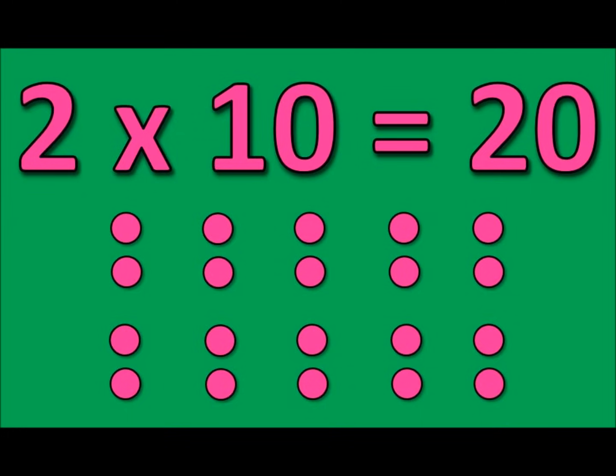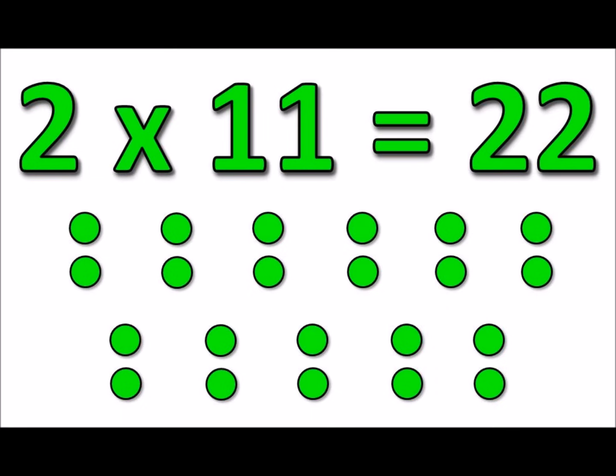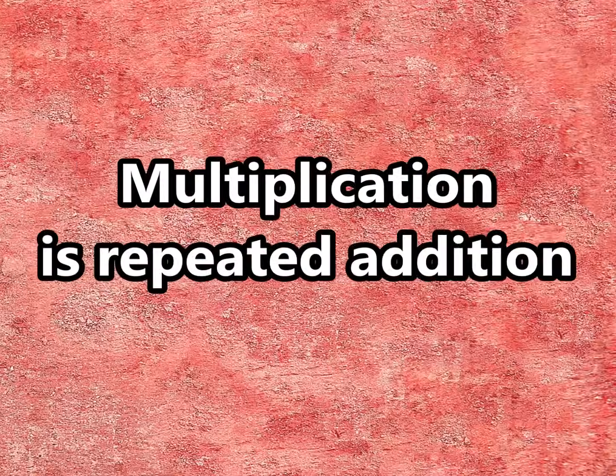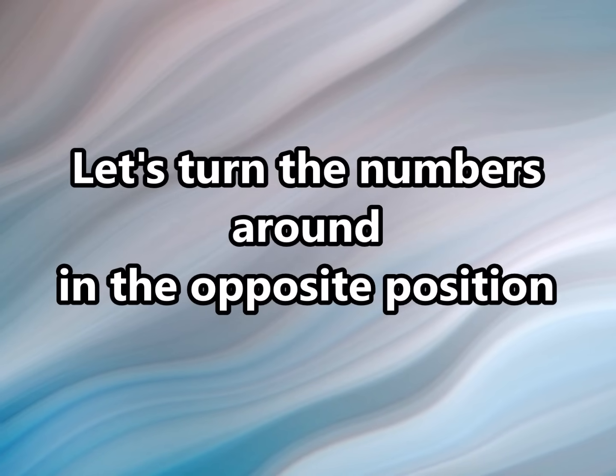2 times 11 is 22. 2 times 12 is 24. Multiplication is repeated addition. Let's turn the numbers around.